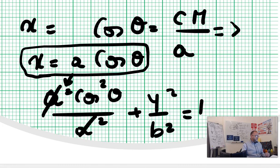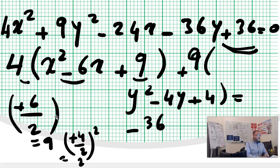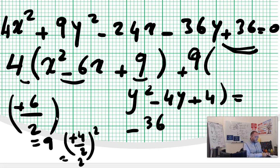Now let me give you an example. They always start you with something like: 4x² + 9y² - 24x - 36y + 36 = 0. They tell you: find the equation of the auxiliary circle. That's how we'll see how this relates to parametric.